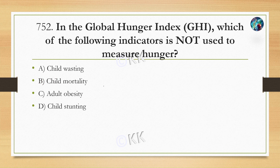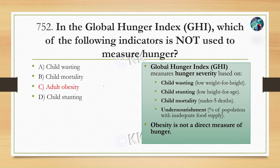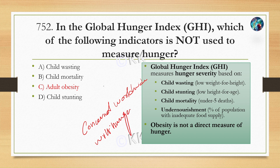Next question: In the Global Hunger Index, which of the following indicators is NOT used to measure hunger? Option A: Child wasting, Option B: Child mortality, Option C: Adult obesity, Option D: Child stunting. The correct answer is Option C, Adult obesity. The Global Hunger Index is published by Concern Worldwide and Welthungerhilfe — both NGOs. It uses four parameters: child wasting (low weight for height), child stunting (low height for age), child mortality (under-five), and undernourishment. Obesity is not measured.